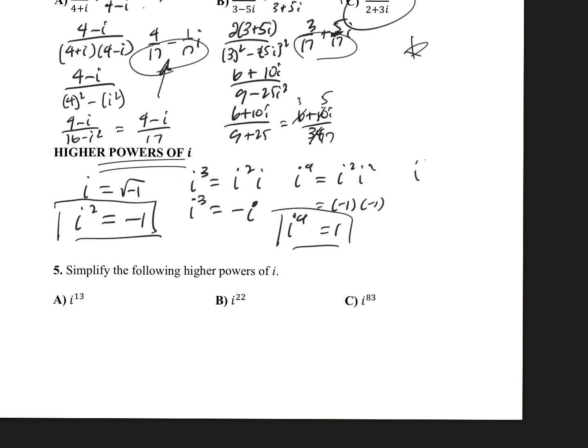And then last but not least, if we tried the next power, i to the fifth, well, this breaks down into i to the fourth times i. We just learned that i to the fourth is 1. So 1 times i is i. And if you look at the beginning of this journey, we started with i. And by the time I got to the fifth power, I'm right back at i.